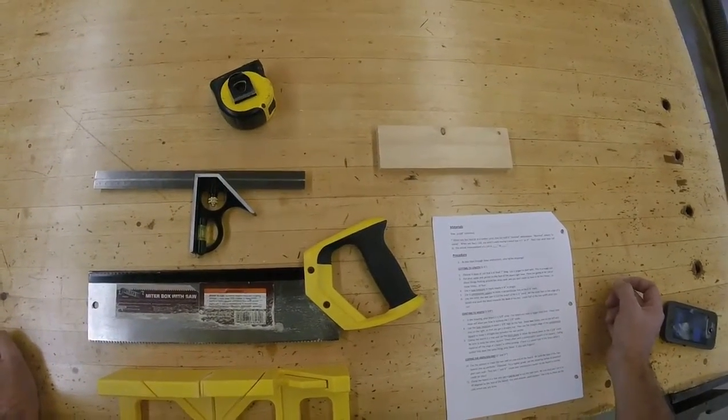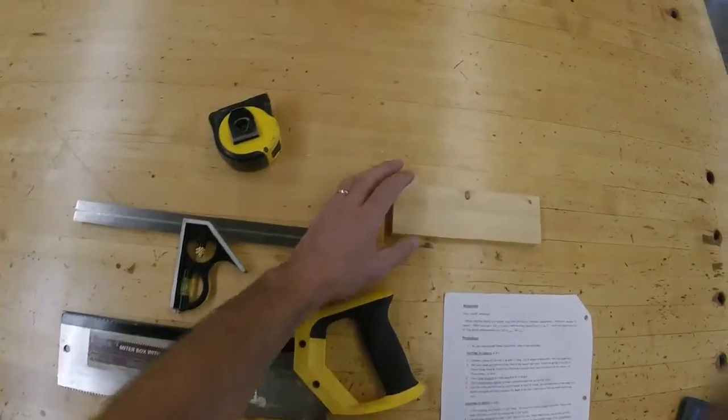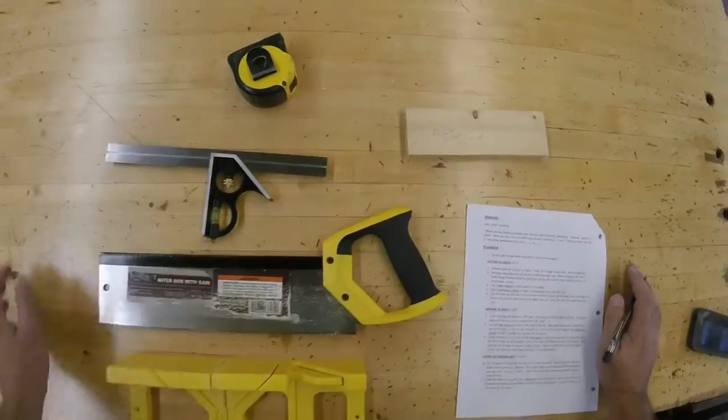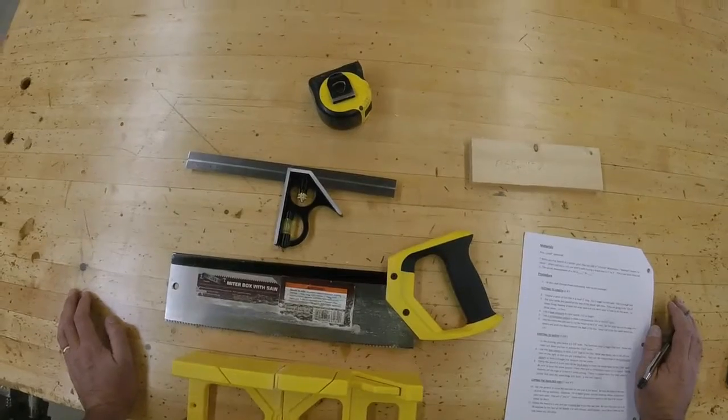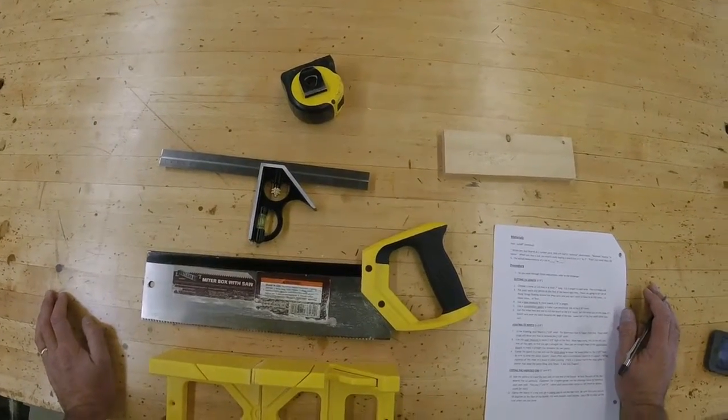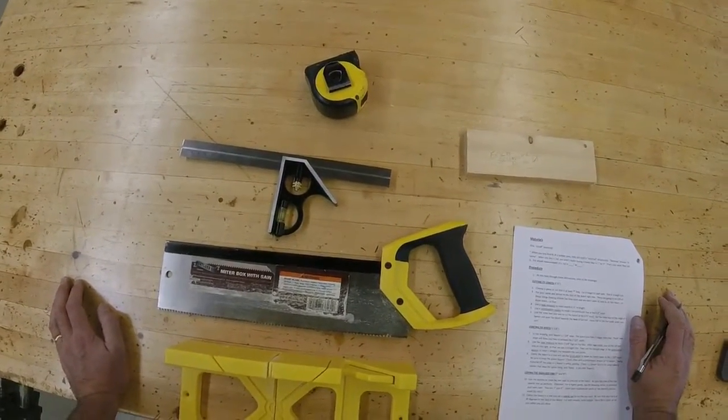Step 3: Put your name and period on the face of the board right now. There are going to be 120 of these things floating around the shop soon, and you don't want to have to do this twice, or three times, or four.